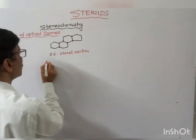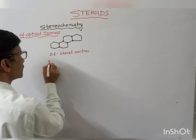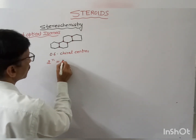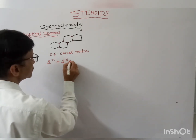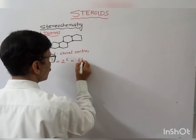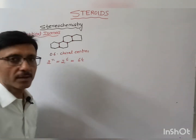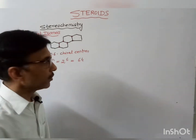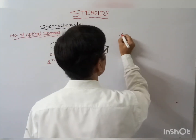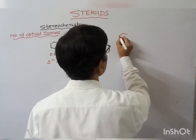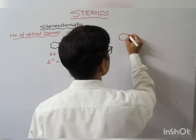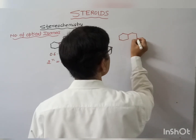Therefore, the number of optical isomers equals 2 to the power n, which is 2 to the power 6, equal to 64.